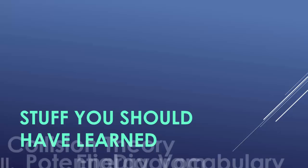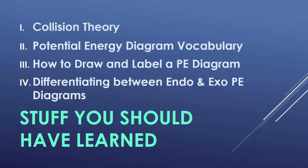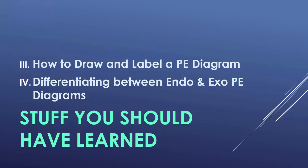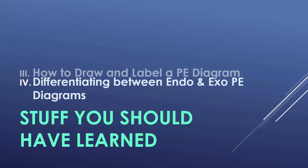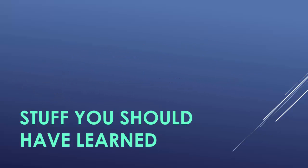All right, so stuff you should have learned. In this video, we talked about what is collision theory. We also talked about potential energy diagram vocabulary. We also learned how to draw and label a potential energy diagram. And we talked about the differences between endo and exothermic diagrams. Other than that, see you next time. Bye.